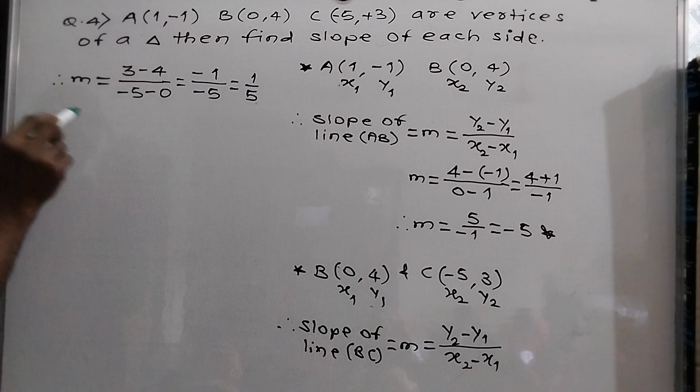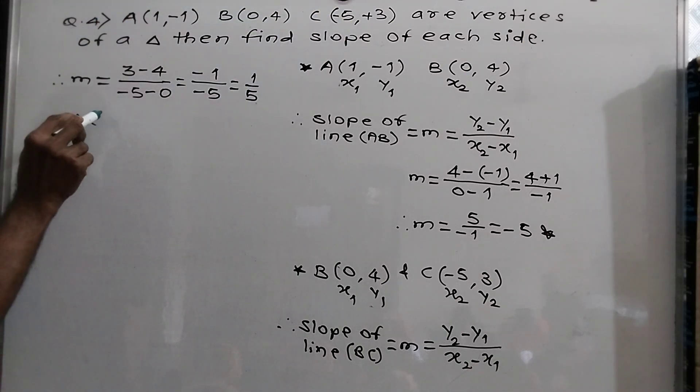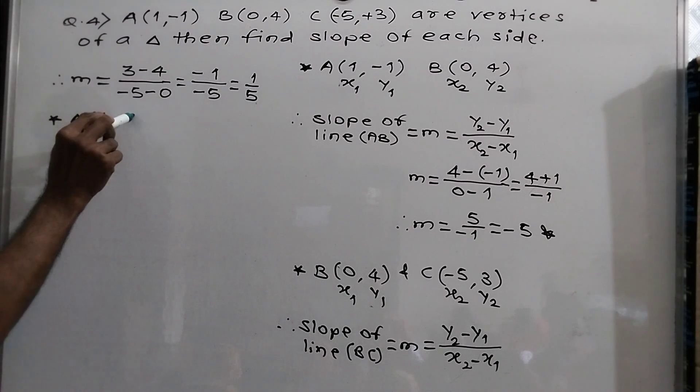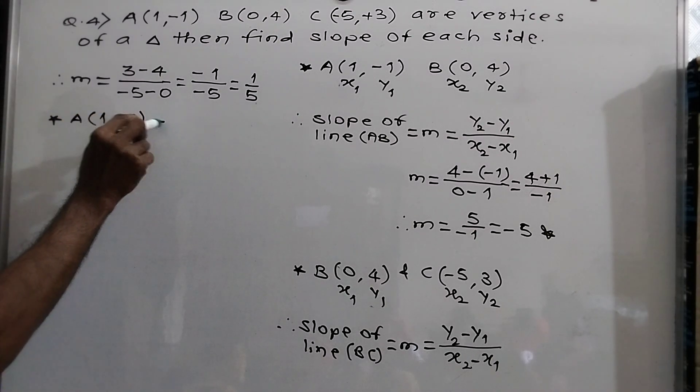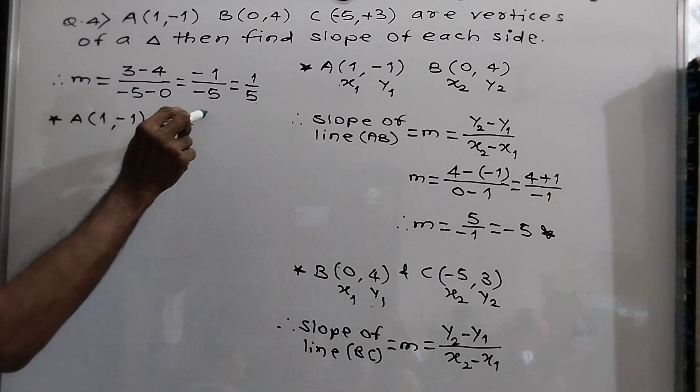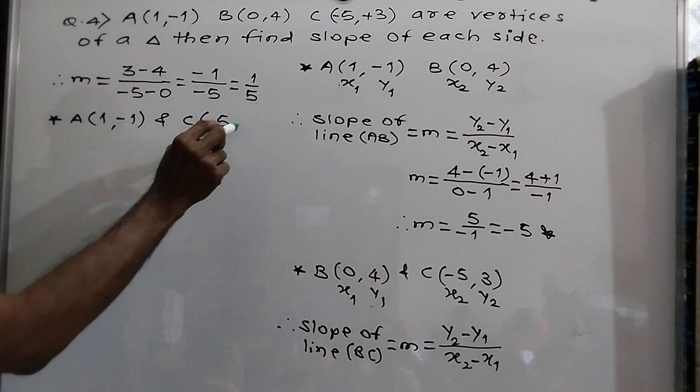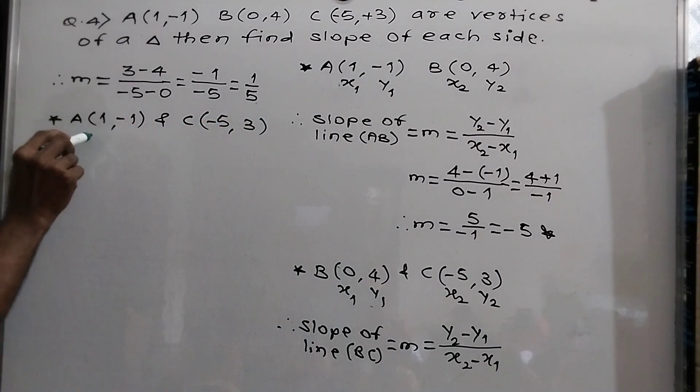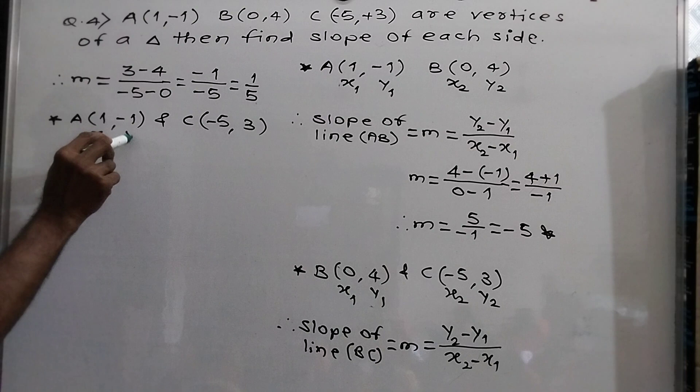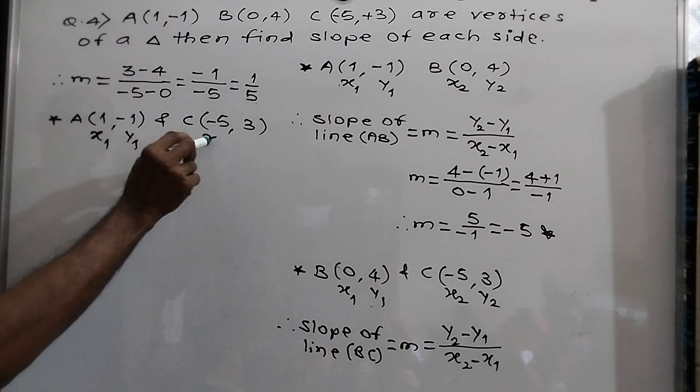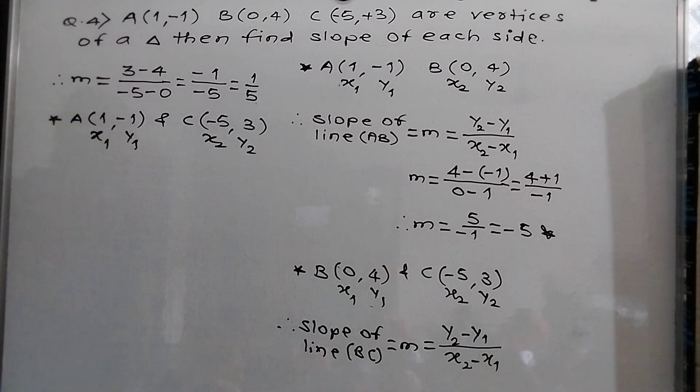Then our third slope, that is AC we take. A(1,-1) and C(-5,3). Therefore x1, y1, x2, y2. Then same method.